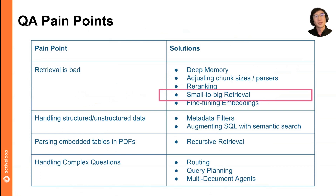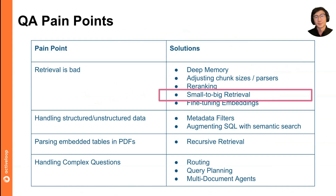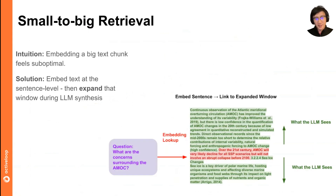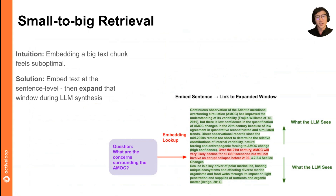LlamaIndex also has a wealth of advanced retrieval concepts to explore that improve retrieval performance beyond what top-K embedding lookup can do. One of these concepts I want to talk about is small-to-big retrieval. This is a pretty important concept that we've presented about in a variety of settings, and it's a very interesting concept to think about.